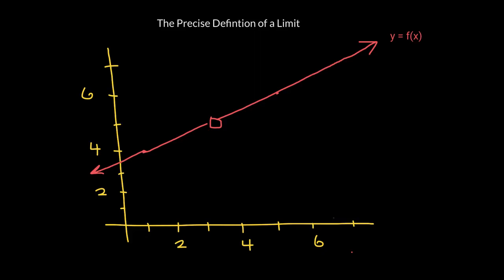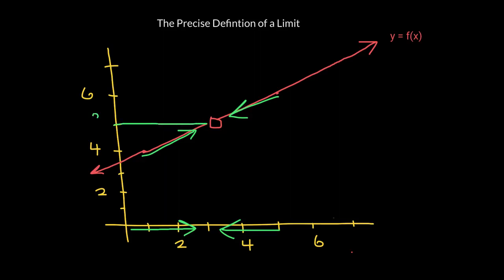Now, I would like us to consider the limit as x approaches 3. Consider as x values approach 3 from both sides — a two-sided limit — your function values are approaching 5. Notice that the function is not defined at x equal to 3, but that does not necessarily mean the limit does not exist.